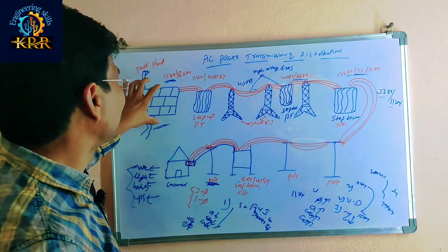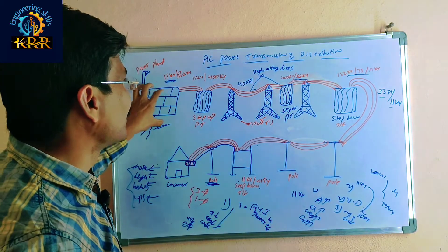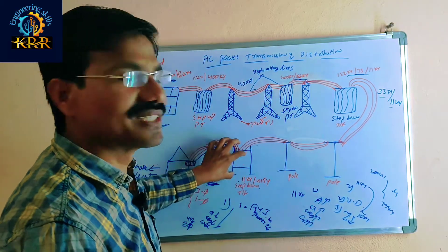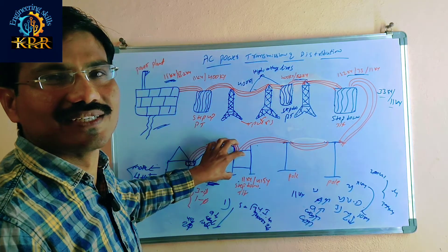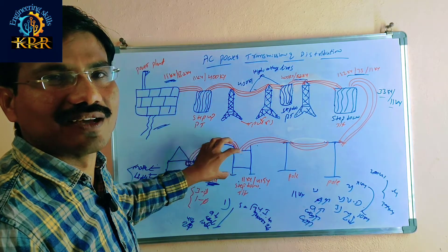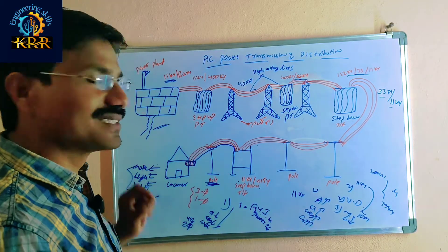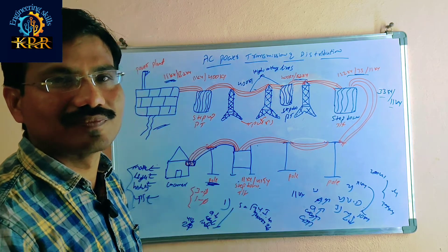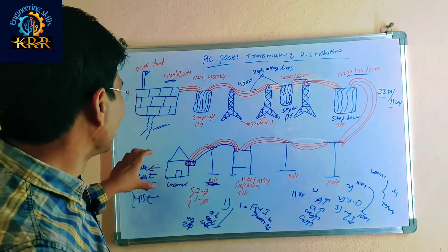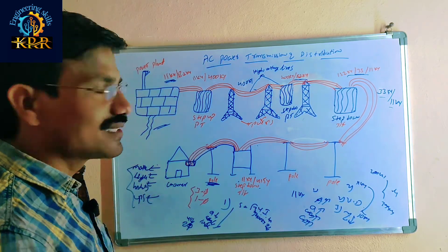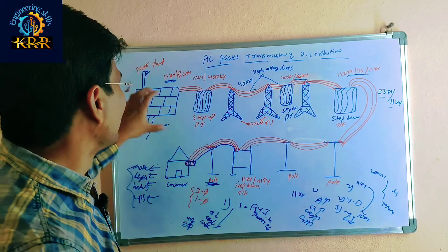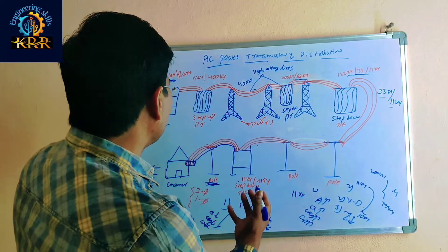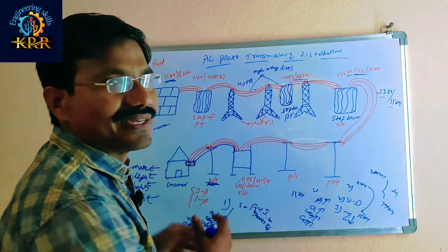After generation comes transmission and distribution, followed by applications. This is the power system. Generation and demand must be coordinated.